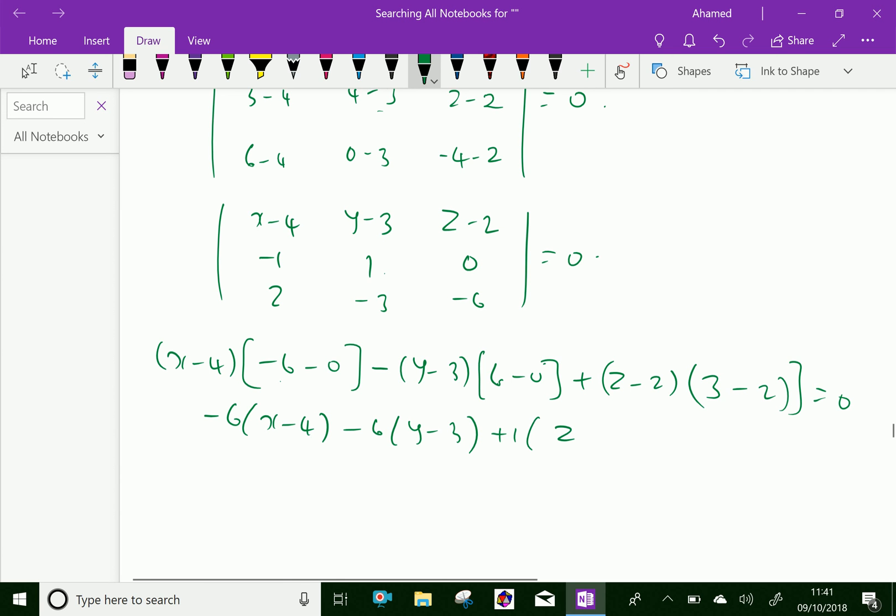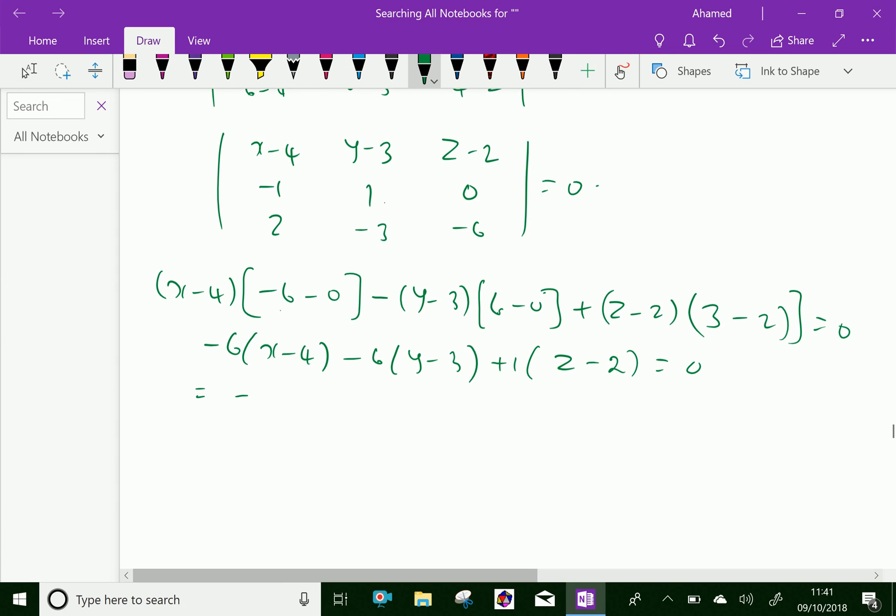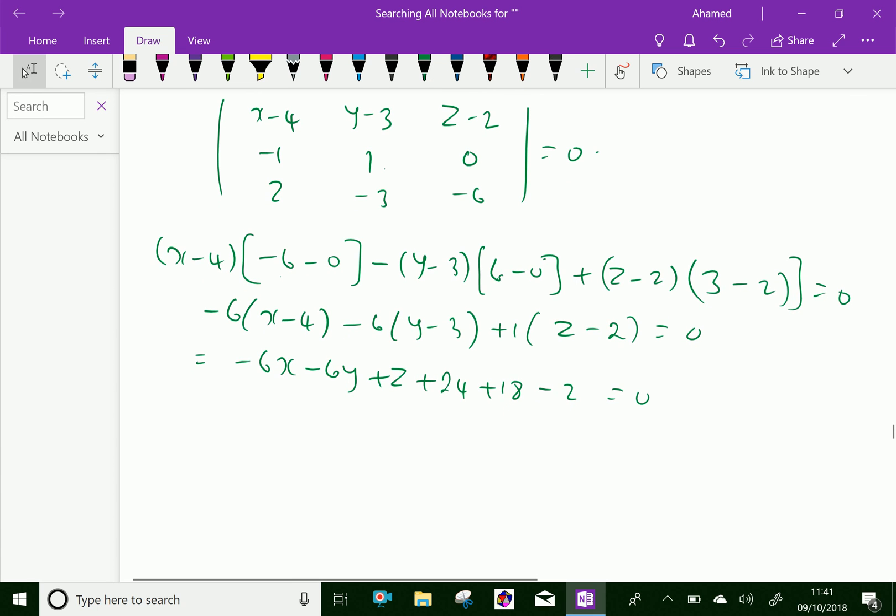That is in further simplifying you get minus 6x minus 6y plus z, and minus 6 into minus 4 is plus 24, minus 6 into minus 3 is plus 18, and minus 2 equal to 0. So then further minus 6x minus 6y plus z, 24 plus 18 is 42, 42 minus 2 is 40.